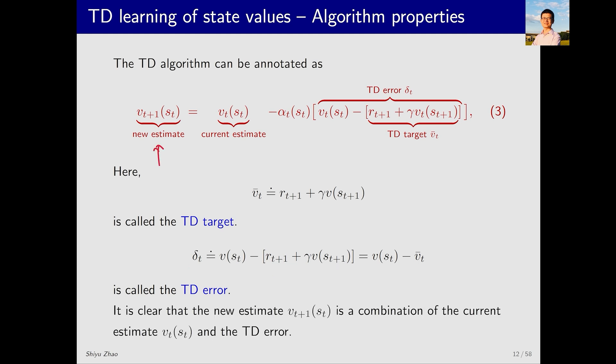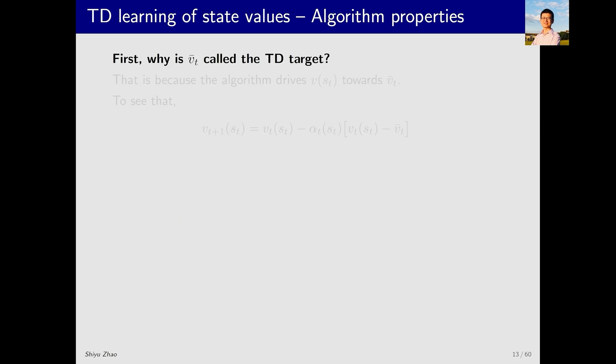In summary, the new estimate is obtained by adding a correction term to the old estimate. Next, let's explain in detail what the TD target and TD error are. Understanding these two concepts is crucial for understanding the TD algorithms. I hope everyone can pay attention.